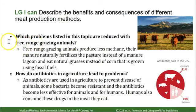Several problems are reduced with free-range grazing animals. They produce less methane, their manure naturally fertilizes the pasture instead of collecting in a manure lagoon, and they eat natural grasses instead of corn that is grown using fossil fuels. Regarding antibiotics: they are used not just to treat disease but to prevent it because animals are so close together. As antibiotics are used in agriculture, some bacteria become resistant and antibiotics become less effective. 81% of antibiotics in the U.S. are used for livestock and only 19% for humans, which increases the rate of antibiotic resistance.